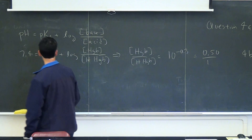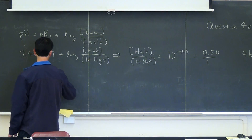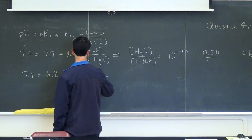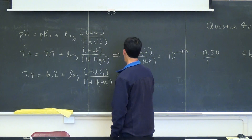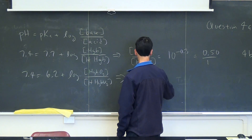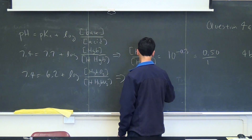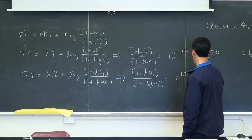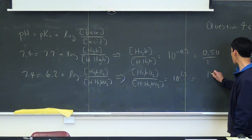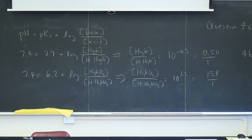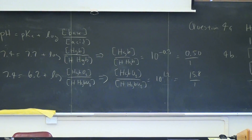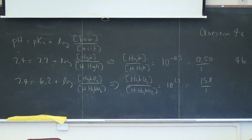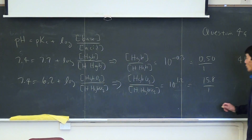For HgbO2, using the same equation and solving for the ratio of base divided by acid, we get 10 to the 1.2 power, which equals 15.8 to 1. So there is 15.8 HgbO2 for every one HHgbO2. Based on these two ratios, the substance present in the highest amount is HgbO2.